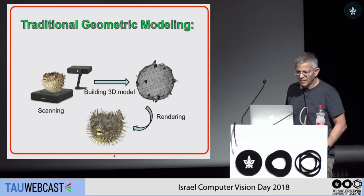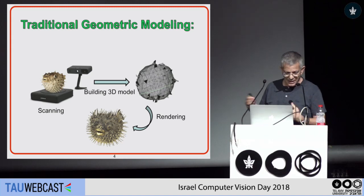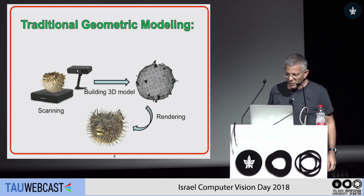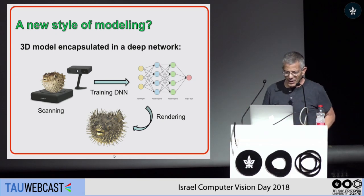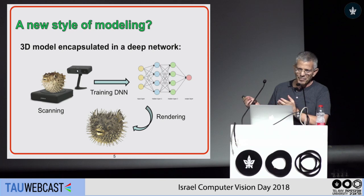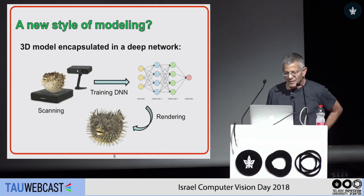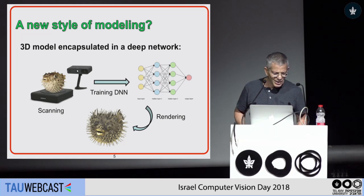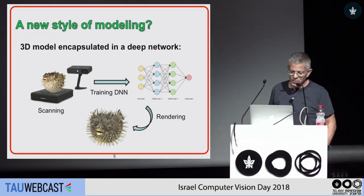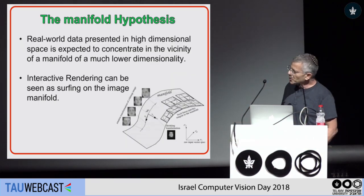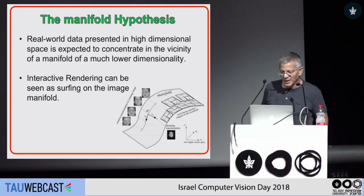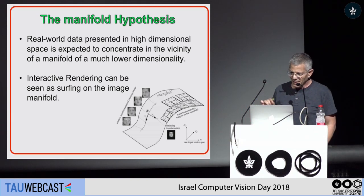This is the traditional modeling we do today: we take an object, scan it, build a geometric model, and then apply interactive rendering. The question is whether, in the future, we'll be able to do everything automatically — meaning we scan an object, put all the images into some deep neural network, and automatically have the model, the structure, and the geometry of the object, and then be able to do interactive rendering. I'm not going to show you a solution for this problem today, but maybe one step toward this goal.